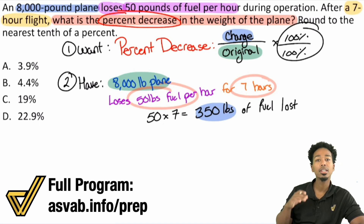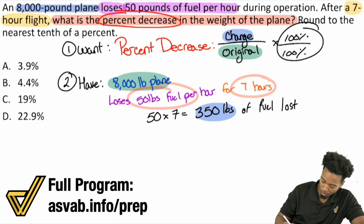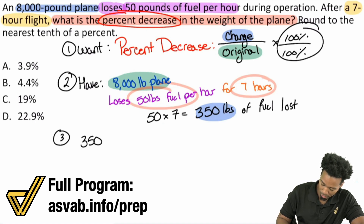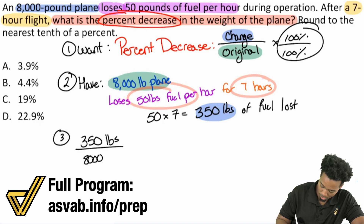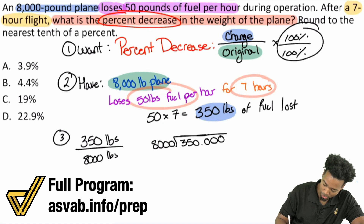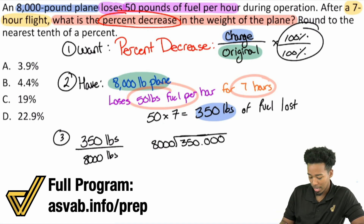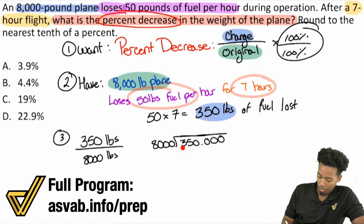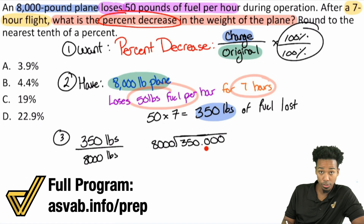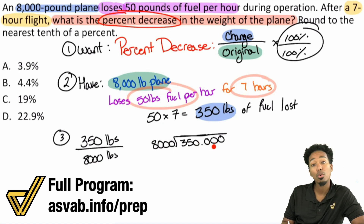We need to multiply by 100% to turn it into a percent. Step three, here's our connection — we'll build it. The change we have was 350 pounds, and the original was an 8,000 pound plane. So we divide 350 by 8,000. It's very likely we'll need decimal places. How many times does 8,000 go into 350? It can't. Into 3,500? No. Into 35,000? Yes — that's four times, because 8,000 times 4 is 32,000. So we place a 4 after the decimal.